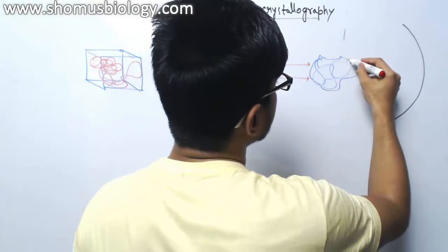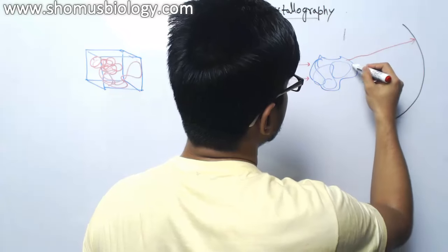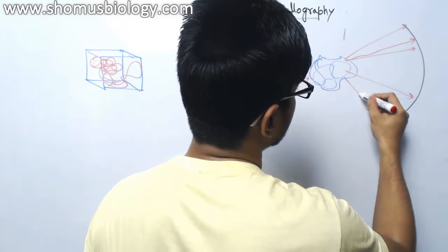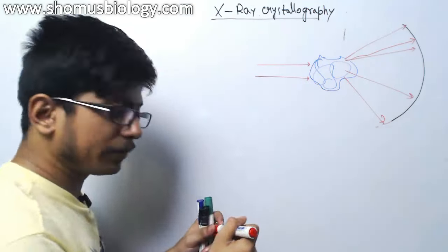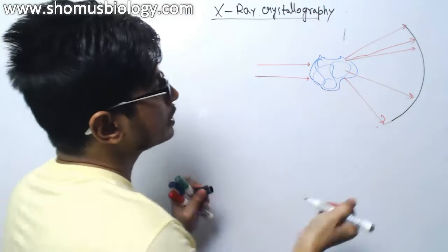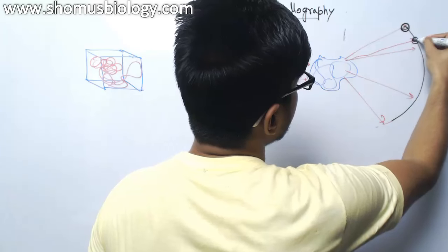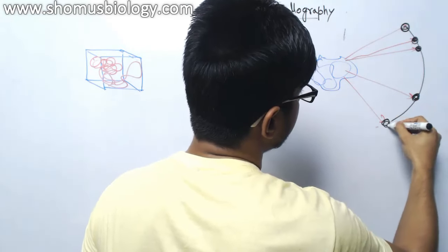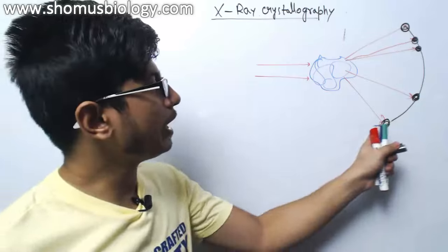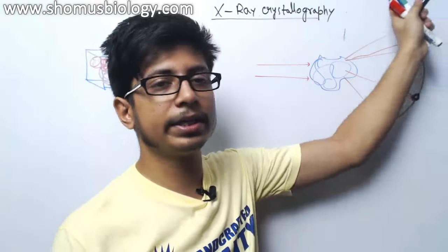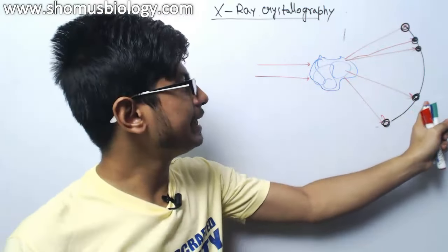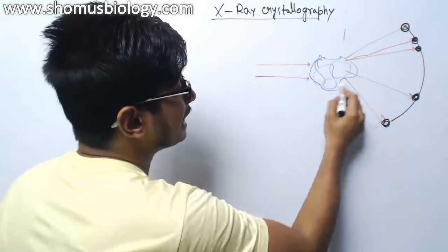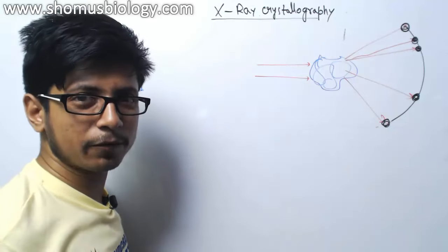The diffraction goes in different directions — one spot here, another there, and so on. So if you look at this X-ray film, you will see a diffraction pattern: wherever the X-ray hits the film, a different spot is generated on that film or plate. That plate is very important to find out exactly what kind of protein structure we are looking for.